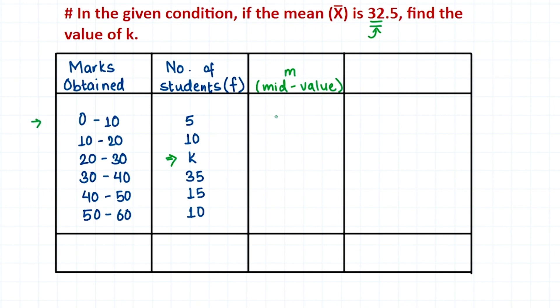For the 0 to 10 class, the mid value is 5. For 10 to 20, it's 15. For 20 to 30, it's 25. For 30 to 40, it's 35. For 40 to 50, it's 45, and for 50 to 60, it's 55.